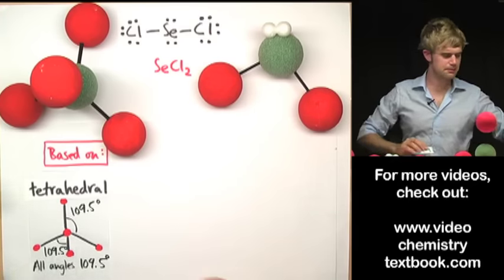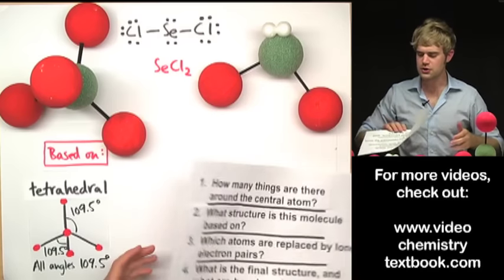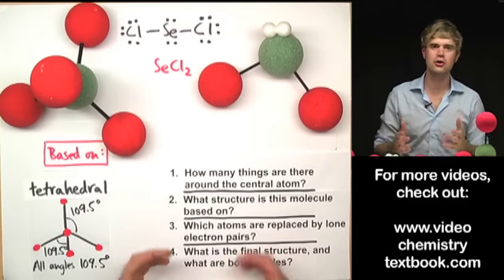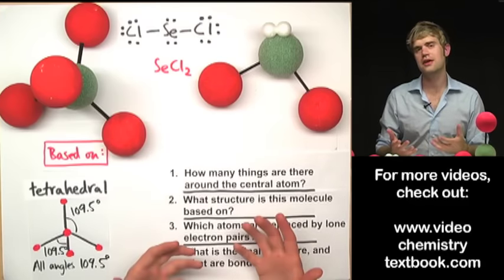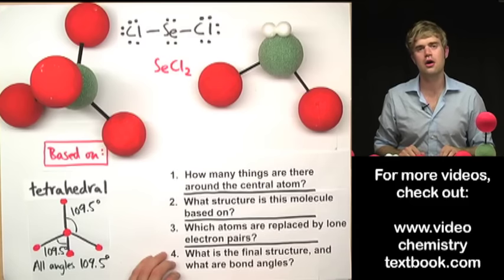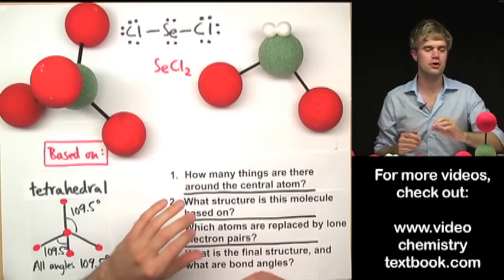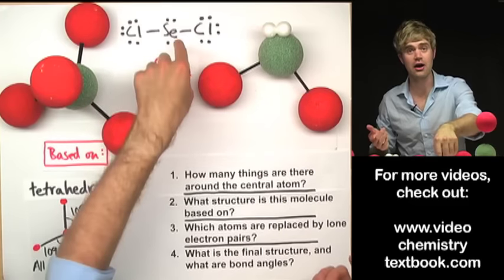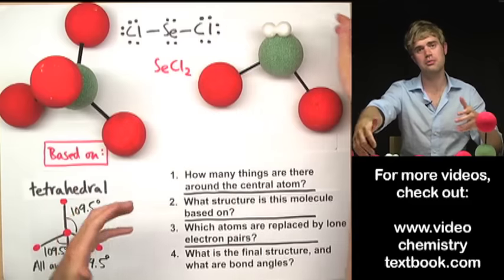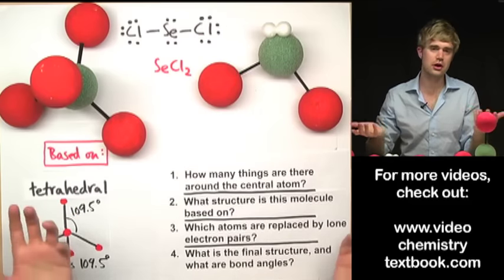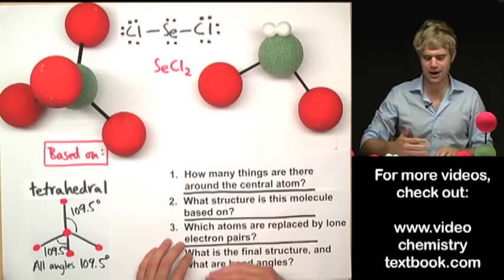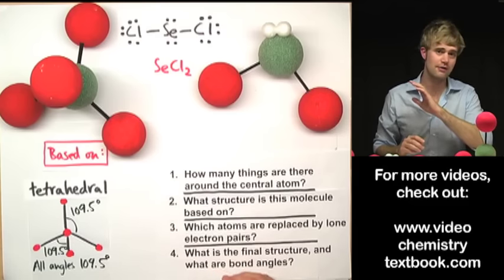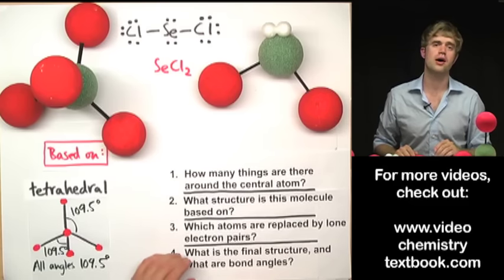These steps are the ones you always want to go through every time you look at a Lewis structure and figure out the VSEPR shape. Think about the base structure the molecule uses, then figure out how many atoms have been replaced by lone electron pairs — that tells you the final shape. Keep practicing until it's second nature and you won't have any trouble with these problems. Good luck.